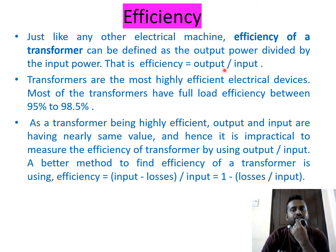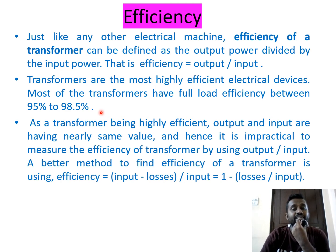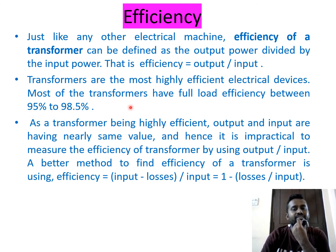Efficiency of a transformer is defined as output power divided by input power. Most transformers have full-load efficiency between 95% and 98.5%, making them highly efficient electrical devices. Because efficiency is so high, output and input values are nearly the same.